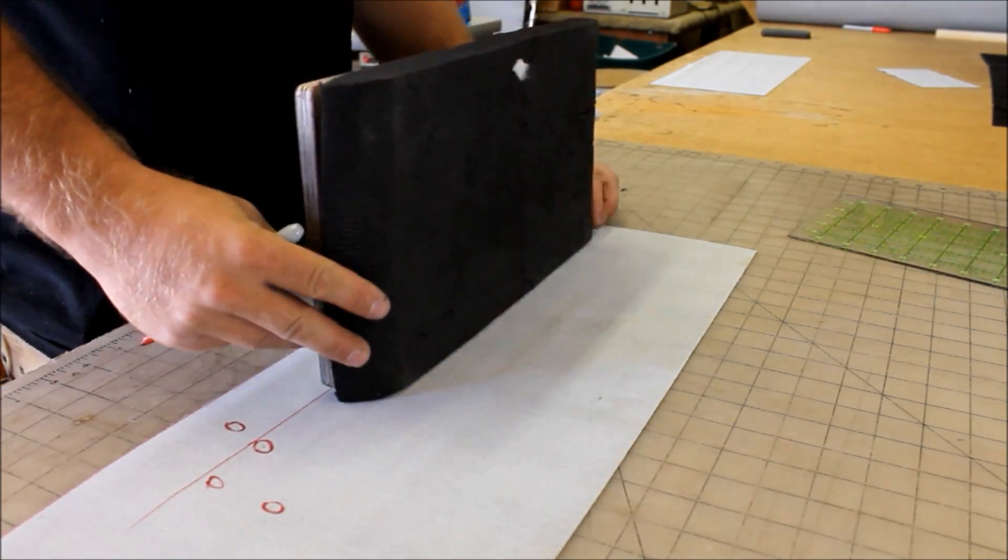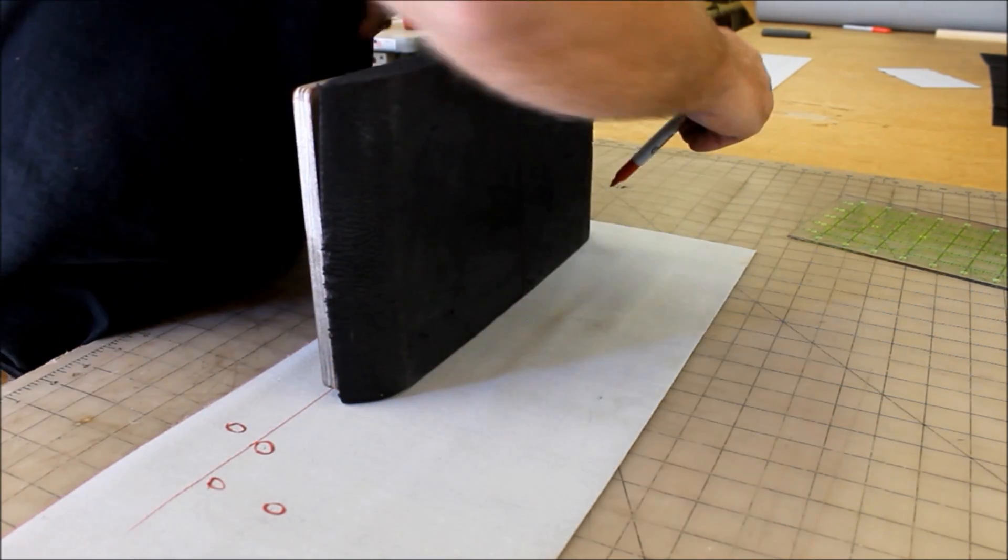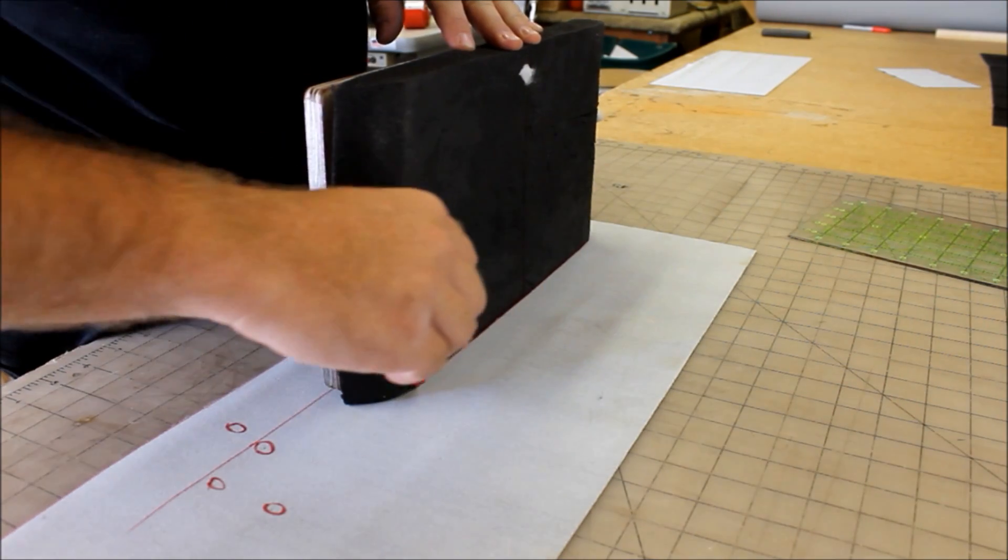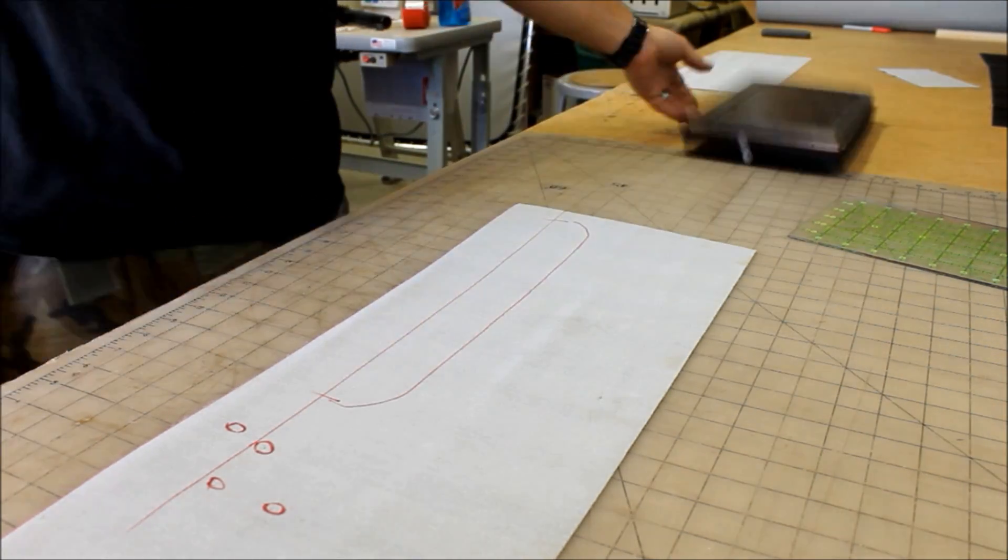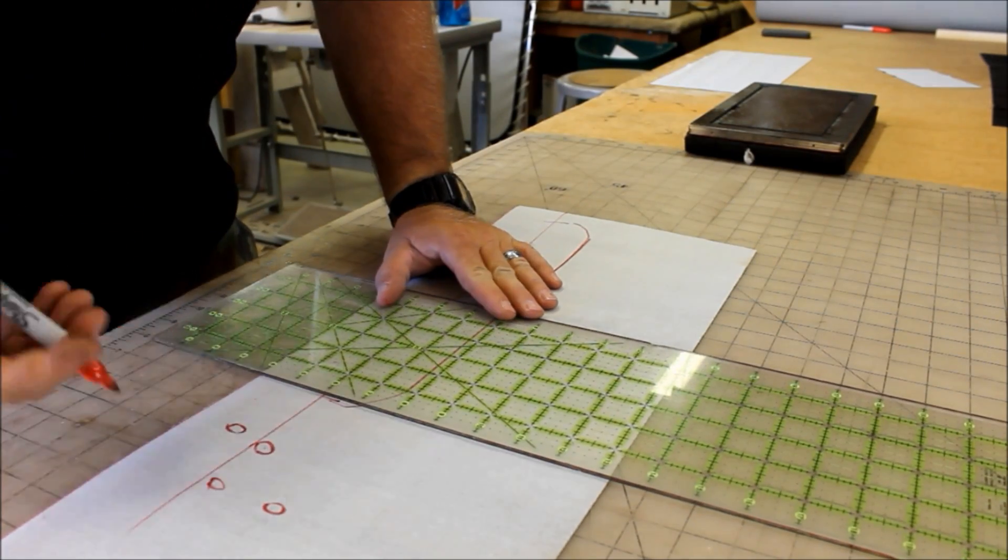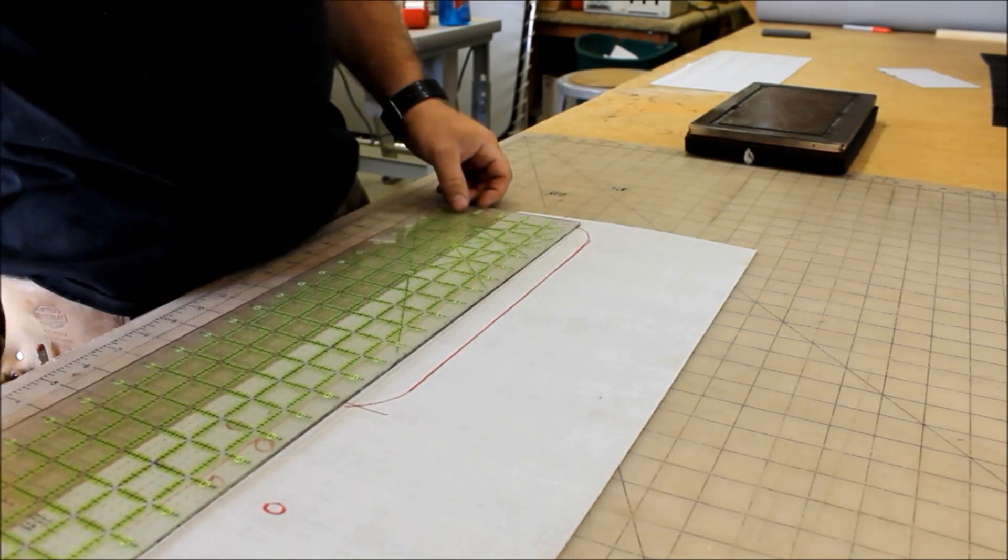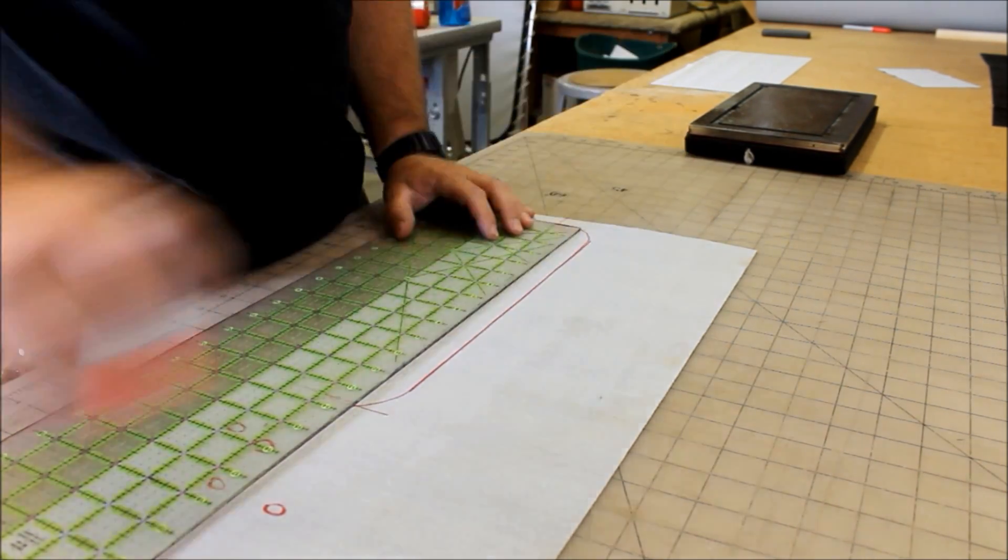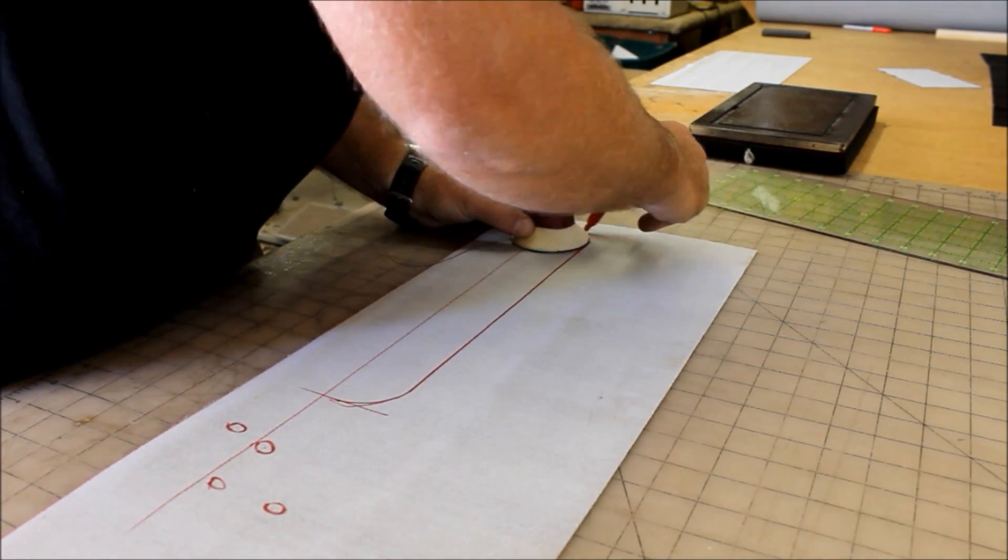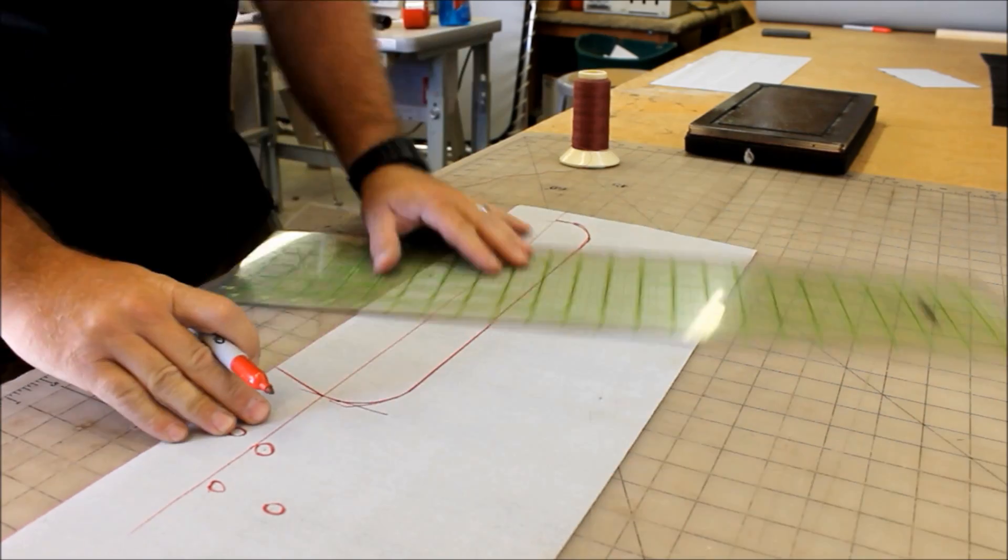Now I'm going to start working on the side panels. I traced this initially just to give me an idea of how big the side panel needs to be. Now I'm going to start cleaning it up and making it symmetrical. The key in upholstery really is symmetry. The difference between a mediocre job and a very professionally looking job is taking the time to make things symmetrical and to make things exact.